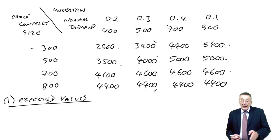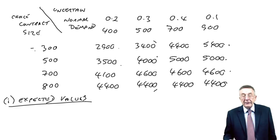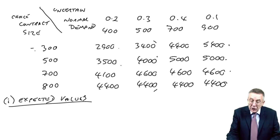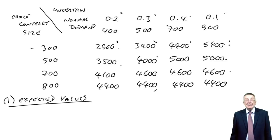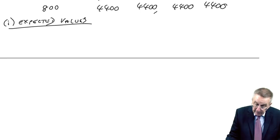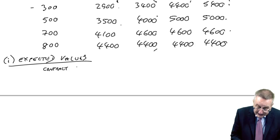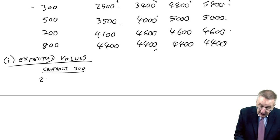If we go for 300, we are going to get 2900, 3400, 4400, or 5400, it would be one of those. But, in a sense, two weeks out of 10, demand will be 400, and we'll get 2900. Three weeks out of 10, we'll get 3400, four weeks out of 10, we'll get 4400, one week out of 10, we'll get 5400. Well, we'll work out an average. And the simplest way of working out the average, I'm going to do it for contract of 300. There are four possible outcomes, 2,900, 3,400, 4,400, and 5400. To get the average, we multiply by the probabilities, and then add up.